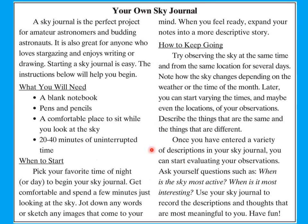Let's take a look at this text and try to find some text features that have been used. At a first glance we can spot the title. The title is a text feature and it's also written in boldface. We can also spot the title of each section, which is the heading. In this section, the information is presented through bullets — for example, they have listed what you will need like a notebook, pens and pencils, and so on. You can also spot the italicized words, which is also an example of a text feature.